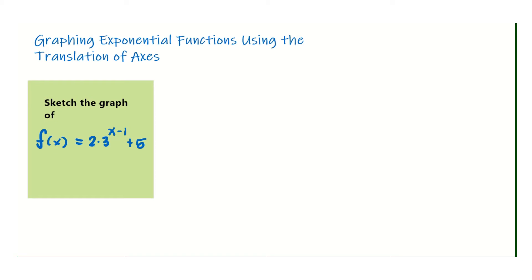In this video I'm going to show you how to graph an exponential function that will require a translation of axis. Translation of axis means we will be moving the x and y axis and we will use that translation in graphing a given function. Let's say the function is f(x) = 2 times 3 raised to x minus 1 plus 5. Since we have base 3 raised to a certain exponent with an x, this is an exponential function.